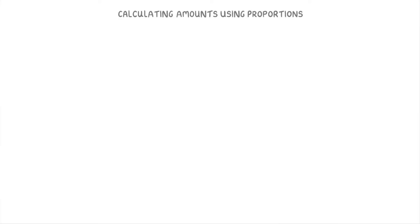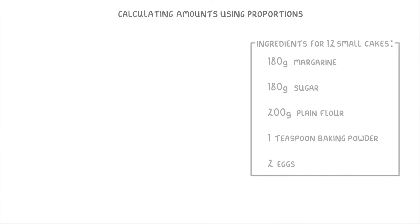Now one of the fairly common questions in this topic is working with recipes. And the way they normally work is that you'll be given a recipe, like this one, which tells you how much of each ingredient you need to bake a certain number of cakes. And then you'll be asked how much of one of the ingredients you'd need if you wanted to bake a different number of cakes. For example, the question could be something like this.